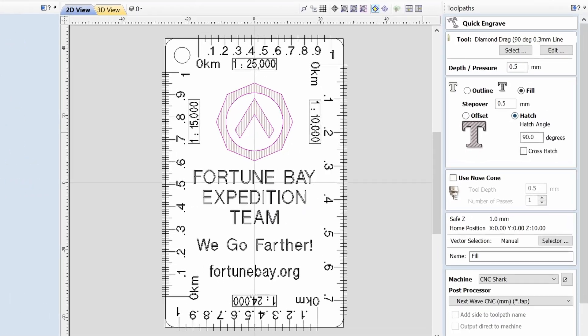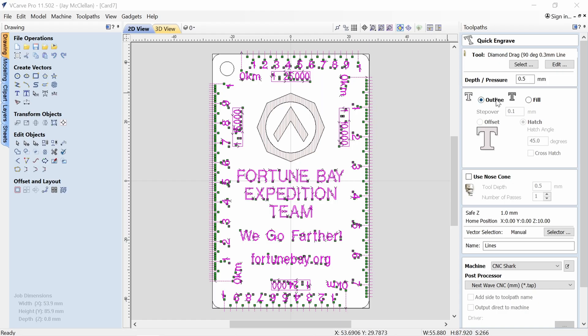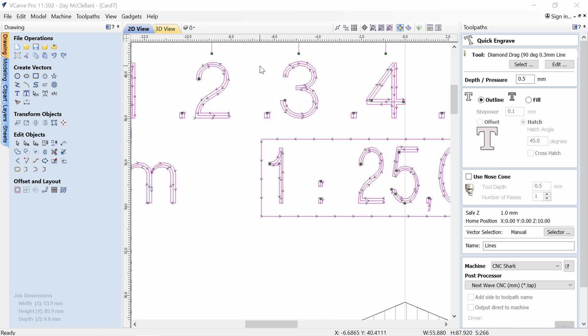The engraving toolpath for everything else uses the outline option, and the outline option will simply draw one stroke for each of the tick marks, and then if I zoom in, you can see that it's drawing three strokes for each of the lines of the text.